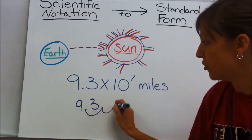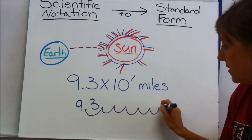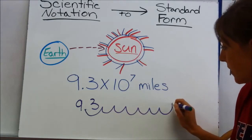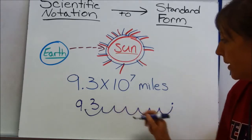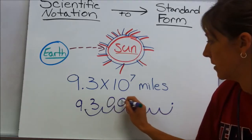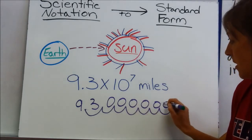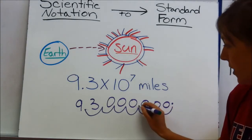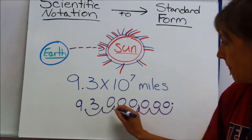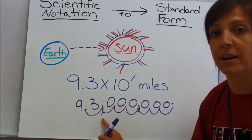So 1, 2, 3, 4, 5, 6, 7. My new decimal, I'm going to put it right here. I'm going to fill in all these blank spots with zeros, and I'll go back and add my commas every third zero. And we have 93 million.